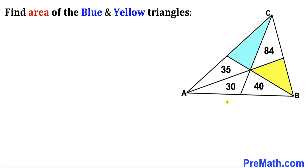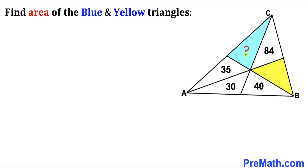Welcome to PreMath. In this video we have triangle ABC that consists of a bunch of smaller triangles, such that the areas of these smaller triangles are 30, 40, 35, and 84 square units. We are going to calculate the area of the blue shaded triangle and also the area of the yellow triangle.